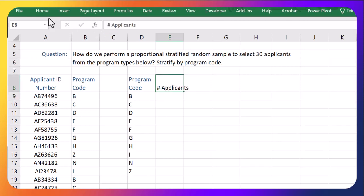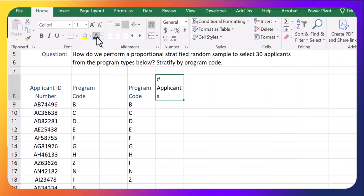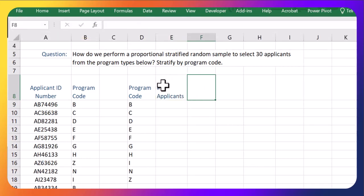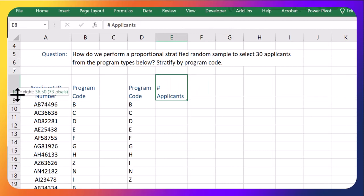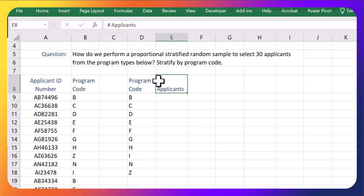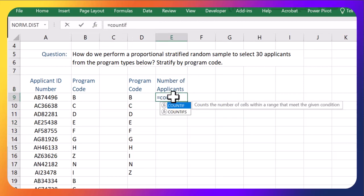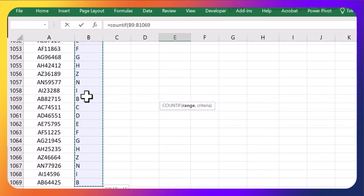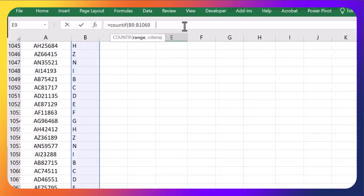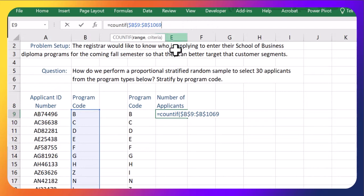And now I'm going to do a count on the number of applicants applying to each of those programs. So I'm going to use a COUNTIF. COUNTIF, I'm going to look in this range. I'm going to lock that, hitting F4. And then comma. I want to see if this program code is a B. That will tell me how many B's there are total.